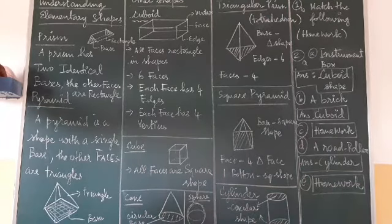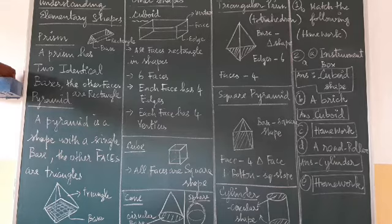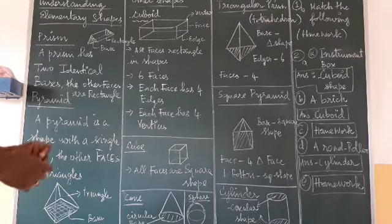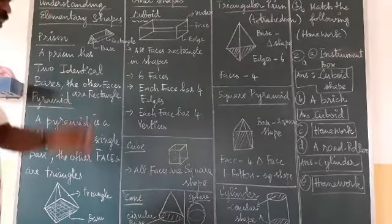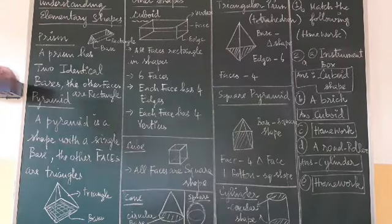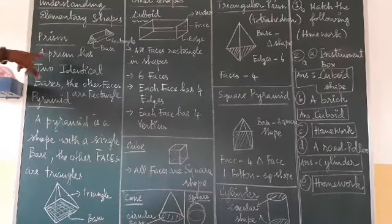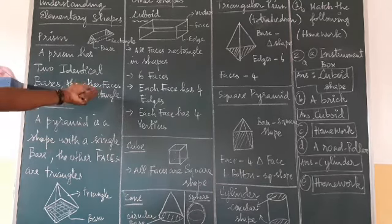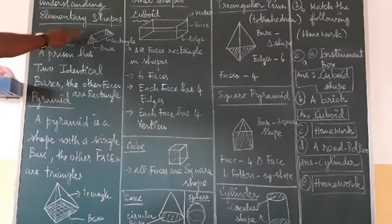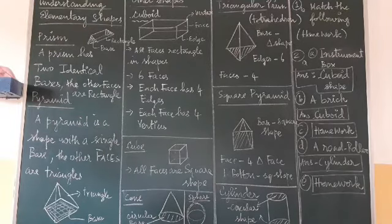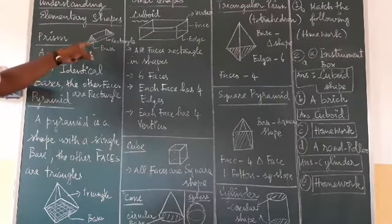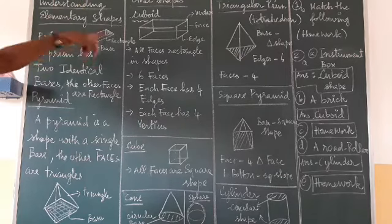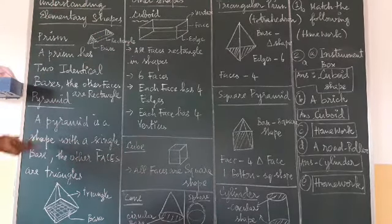Good morning students. In the last class, in chapter number five, 'Understanding Elementary Shapes,' we covered what a prism is. A prism has two identical faces, and the other faces are rectangular in shape — like a triangular prism, where both the base and the top are the same shape, and the sides are rectangles.